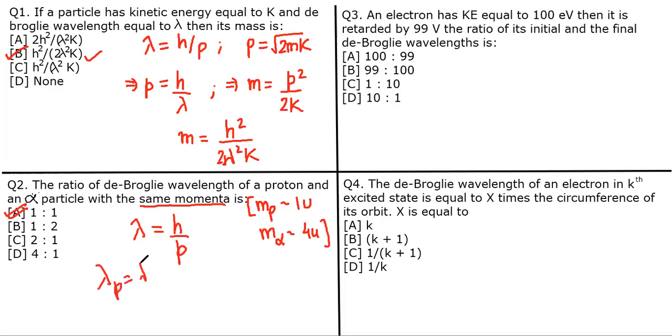Here comes the third question: An electron has kinetic energy equal to 100 eV, then it is retarded by 99 V. What is the ratio of its initial and final de Broglie wavelengths?